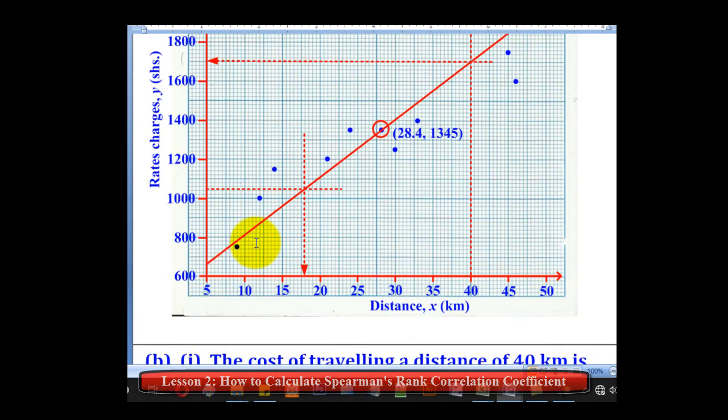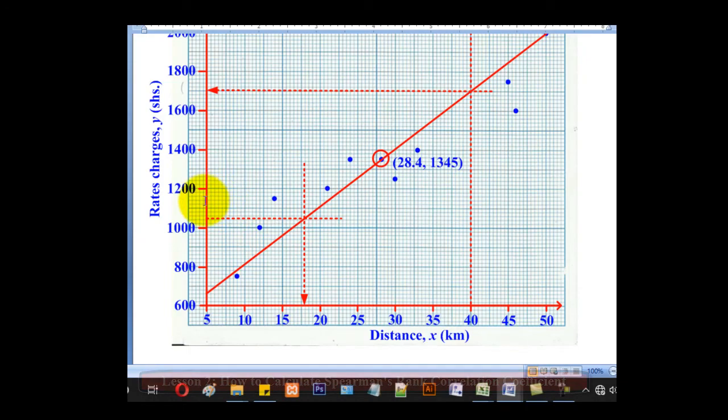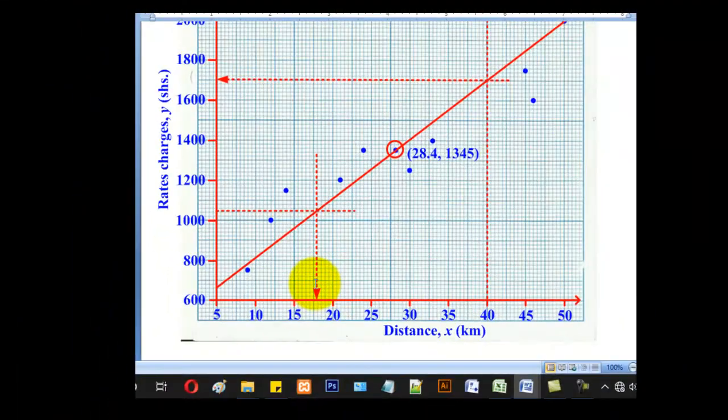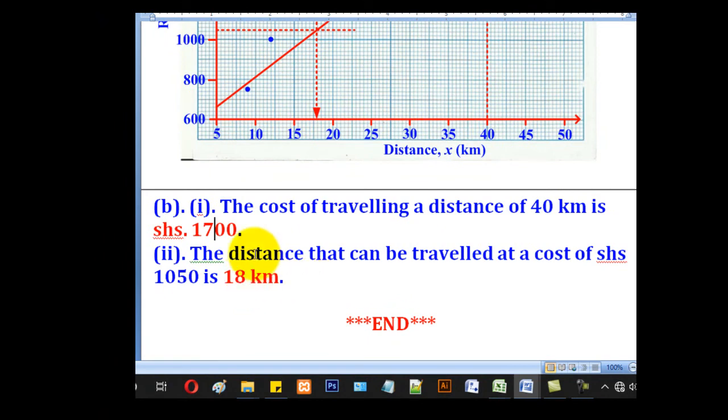Then Roman 2, they wanted the corresponding distance for shillings 1,050. So we shall come here on the vertical axis which has the rates charged. Look for 1,050. Take a horizontal line to meet the line of best fit. Then take a vertical line to meet the horizontal axis. Read off that value and that will be the distance required. So in our case, the distance that can be travelled at a cost of shillings 1,050 is 18km.